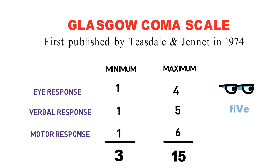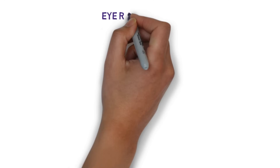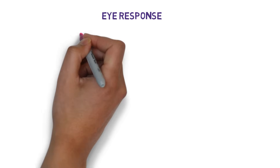Before performing these tests for GCS assessment, you should do a preliminary check that no interfering factor is present — there should be no sedation, paralysis, hearing impairment, or any other confounding factor. Now let's move on to checking eye response.